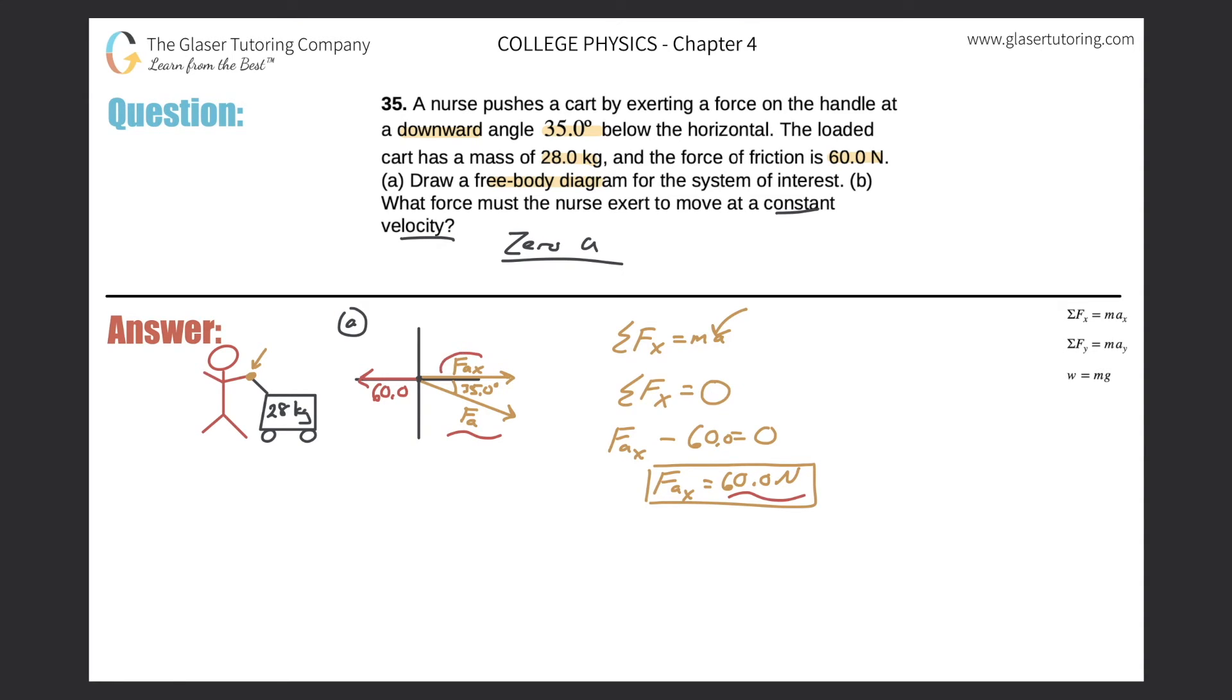You just found this side of the triangle - we're going to use cosine. We're going to have cosine of theta equals the adjacent side over the hypotenuse. So cosine of 35 will equal the adjacent side, which is the force applied in the x direction, which is 60 newtons, all over my hypotenuse value of the force applied.